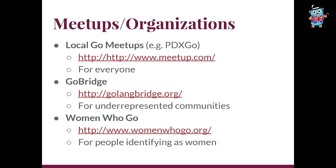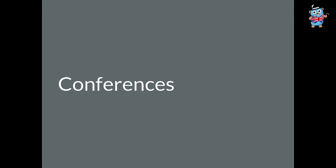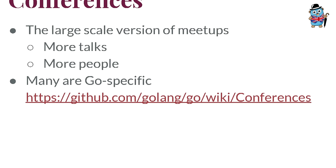There are also meetups you can go to in person. In Oregon I've gone to the PDX Go meetup — actually the first meetup I went to was for Go, where Kelsey Hightower did a talk on Rocket. Lots of places have different ones, some smaller than others. There's GoBridge, which is for underrepresented communities, and Women Who Go, which is for people identifying as women. Meetups are a small version of conferences — usually a lot smaller, fewer people. If you want to start practicing for talks, you could start at a meetup and then move on to a bigger scale conference.